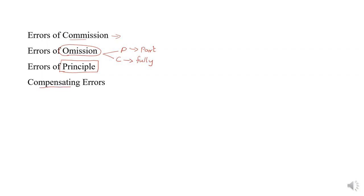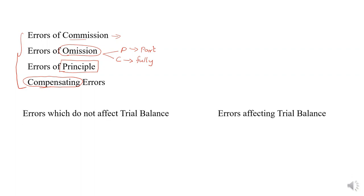Compensating errors means there is a mistake in the debit and equal compensation has been done in the credit. So these are the types of errors. When committed by the accountant, these errors may or may not affect the trial balance. The errors which do not affect the trial balance are called two-sided errors. The errors which affect the trial balance are called single-sided errors.